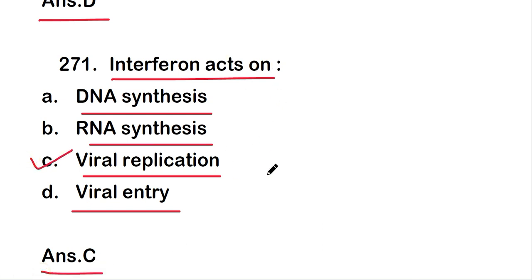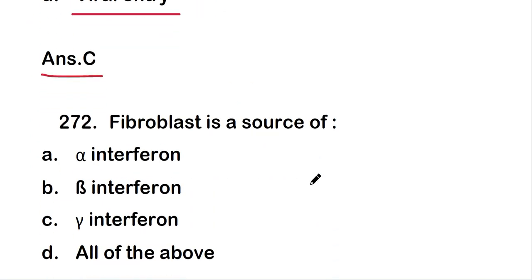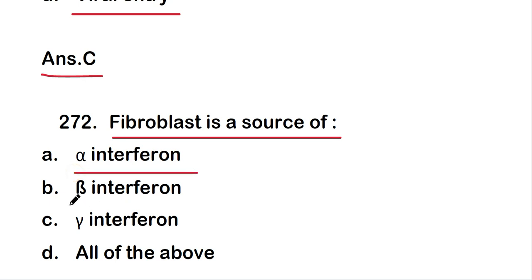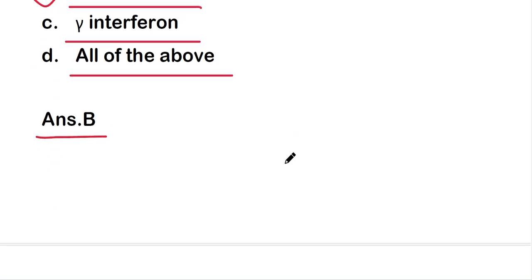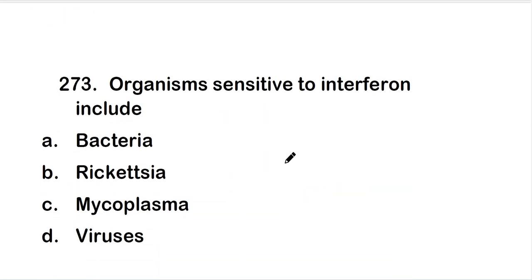The next question: fibroblast is a source of — alpha interferon, beta interferon, gamma interferon, or all of the above? The right answer is option B — beta interferon. Fibroblast is a source of beta interferon.